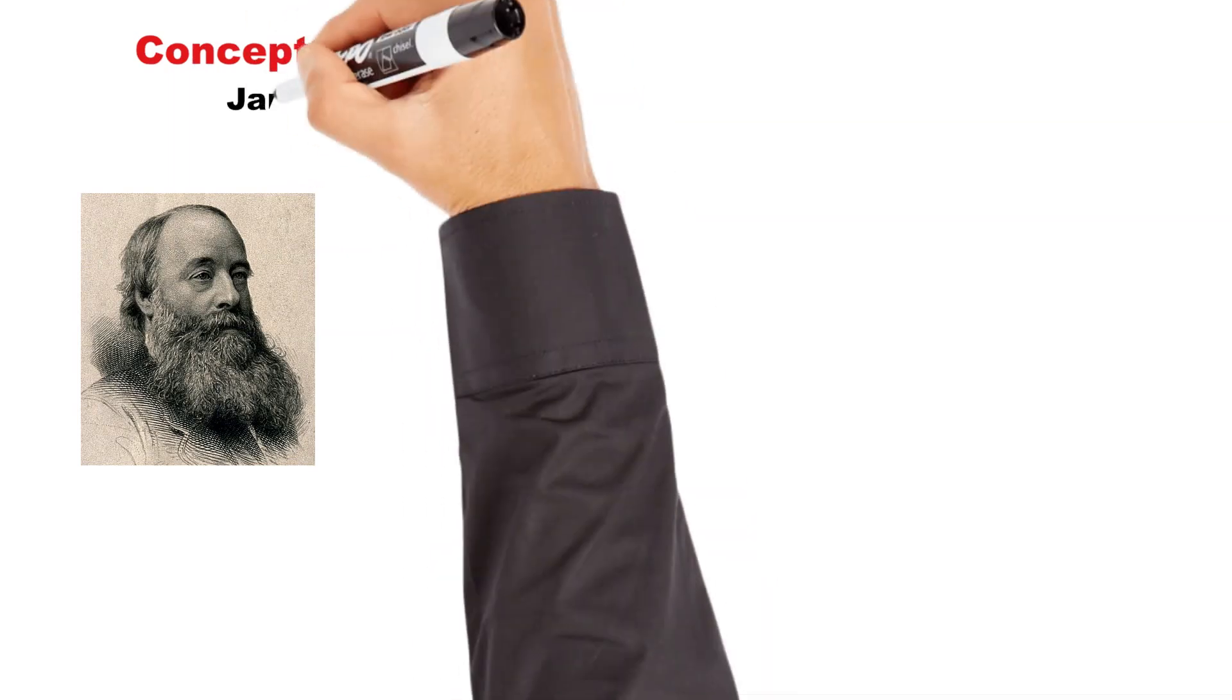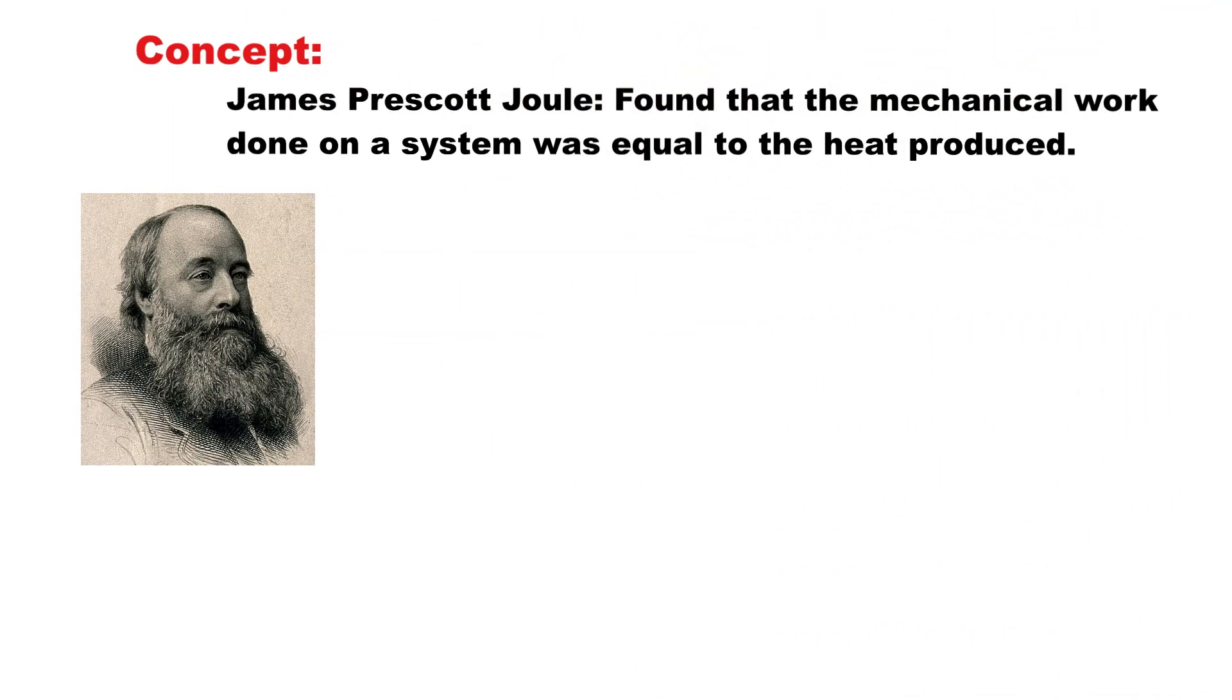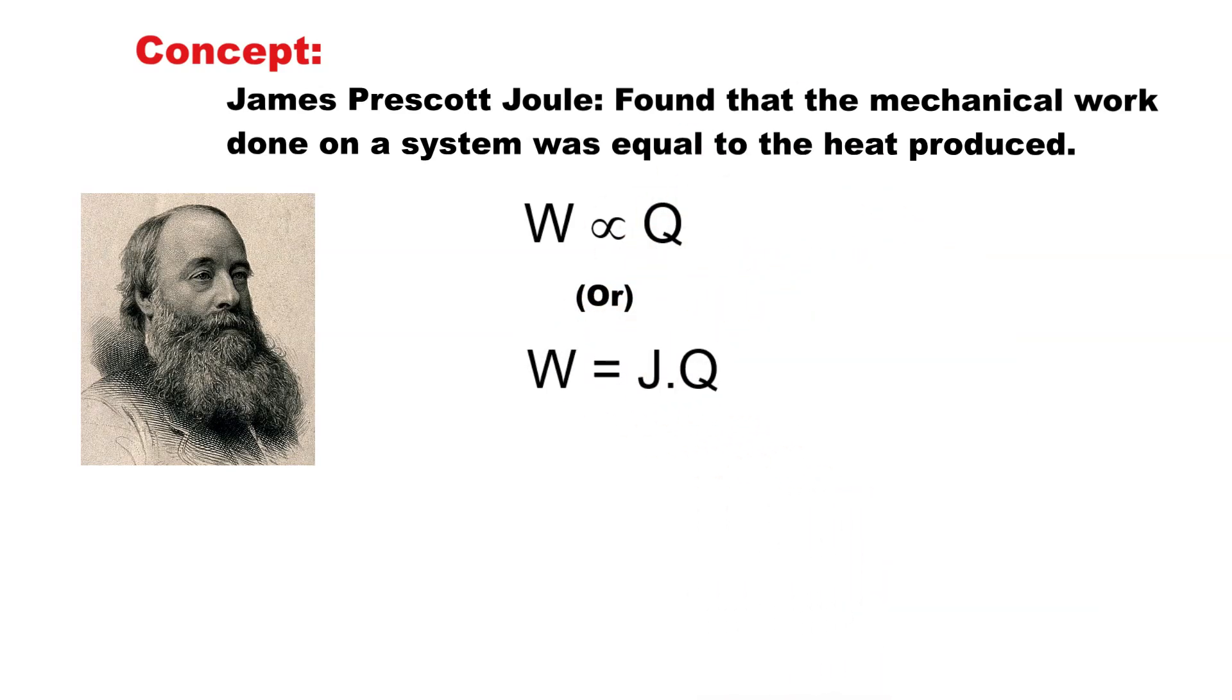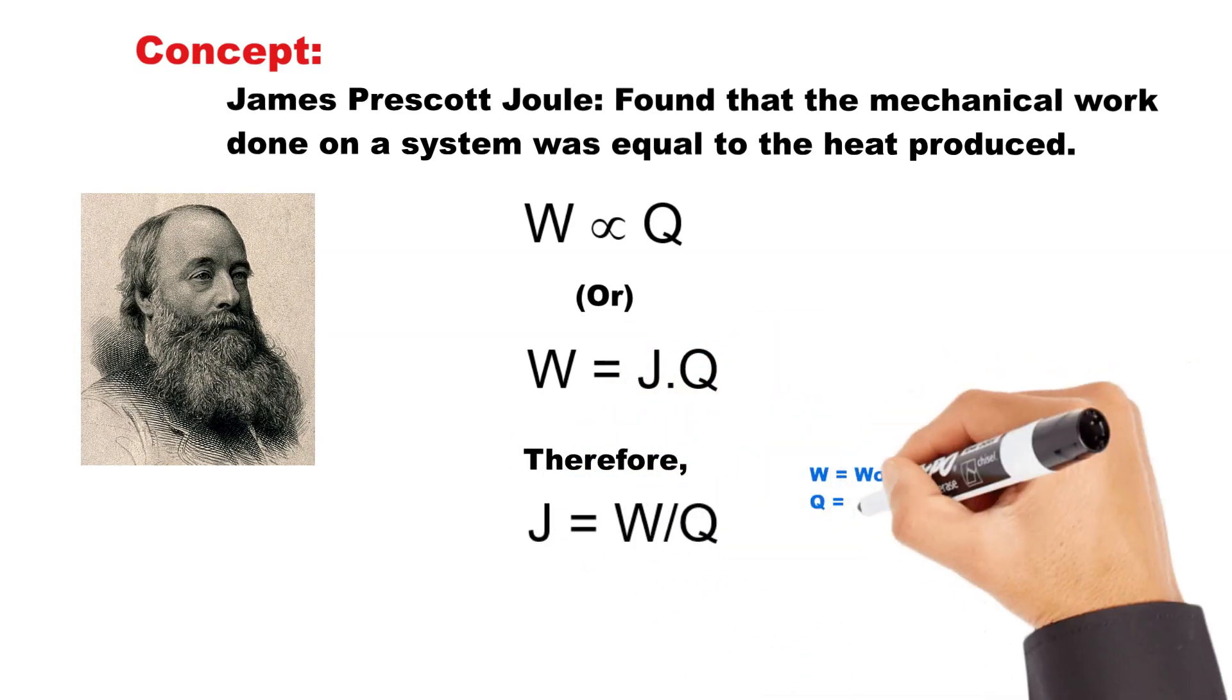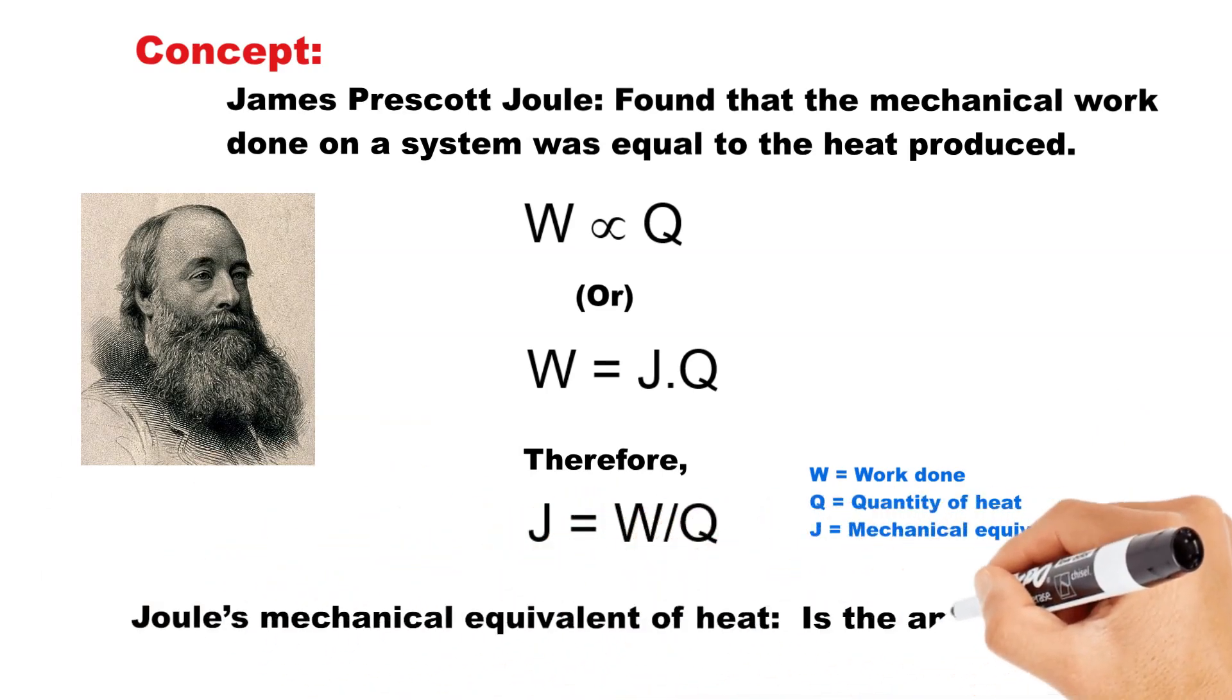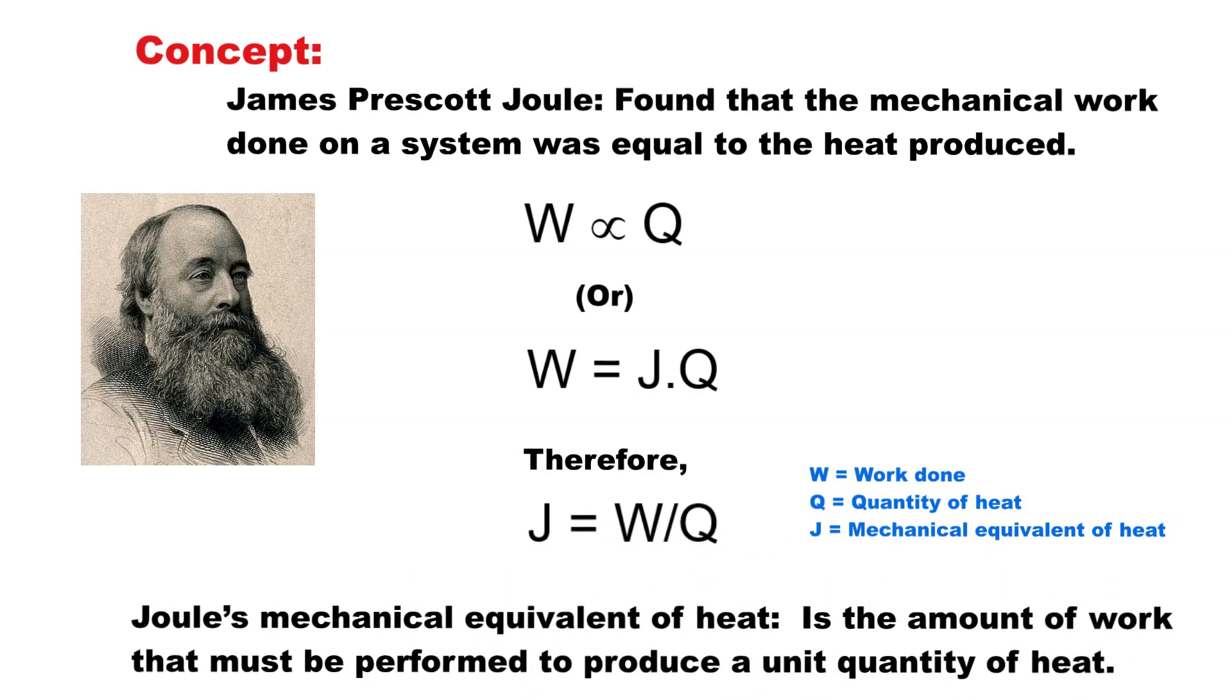James Prescott Joule found that the mechanical work done on a system was equal to the heat produced. This means that the work W is proportional to heat Q, or W is equal to J multiplied by Q. Therefore, J is equal to W divided by Q. This relationship indicates that Joule's mechanical equivalent of heat is the amount of work that must be performed to produce a unit quantity of heat.